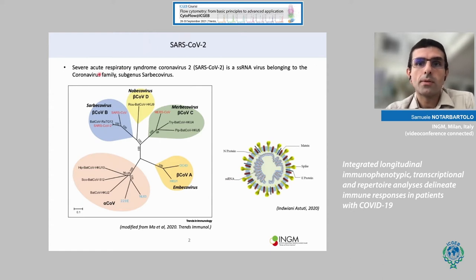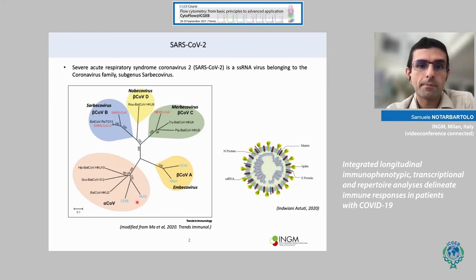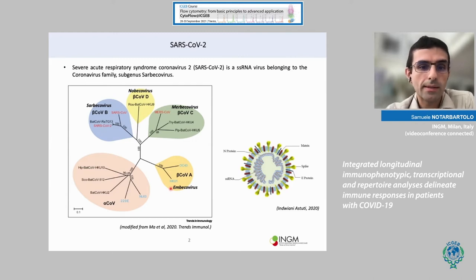SARS-CoV-2 is a single-strand RNA virus belonging to the coronavirus family, and in particular to the subgenus of serbecovirus. As you can see in this phylogenetic tree, we have highlighted in colors the seven coronaviruses that can infect humans. Below in blue, we have four coronaviruses belonging to the alpha and beta genera that cause common cold, so mild pathology.